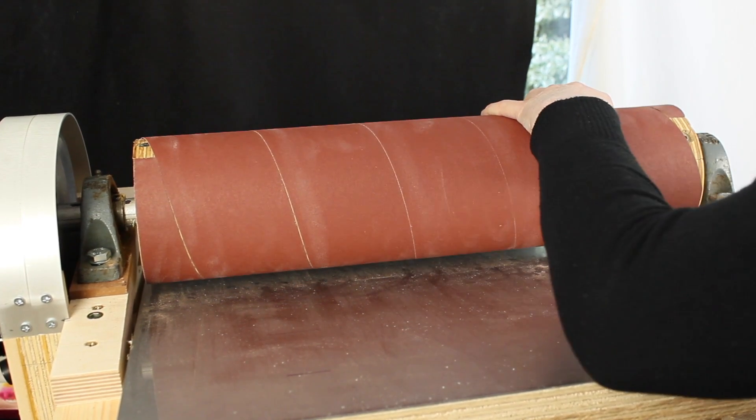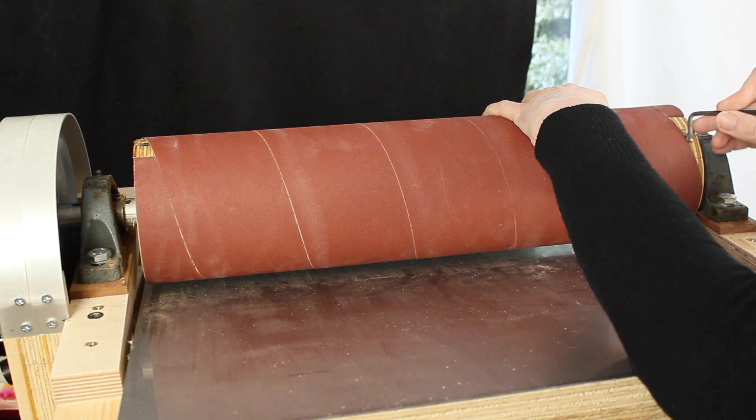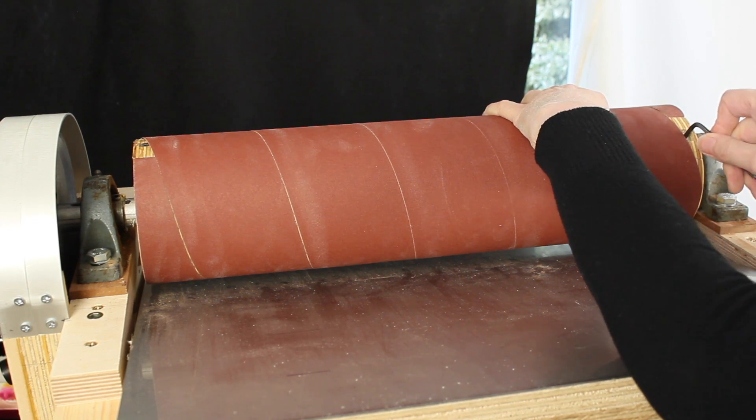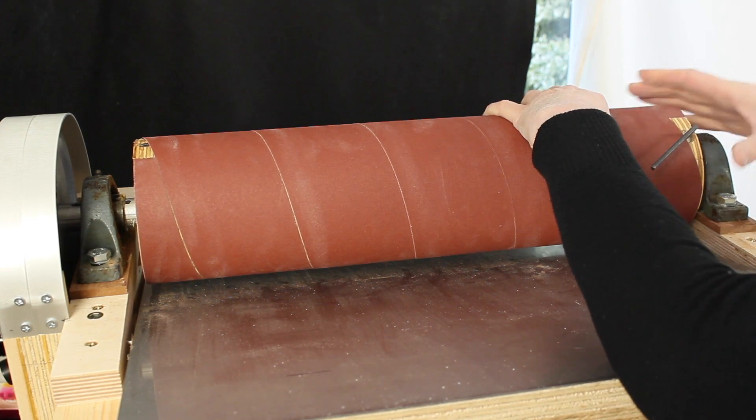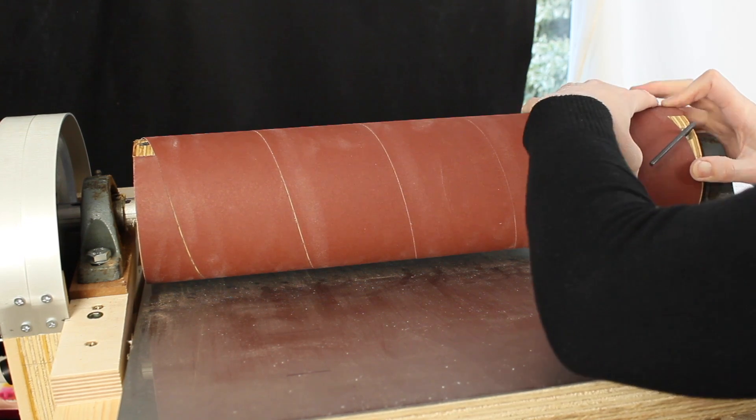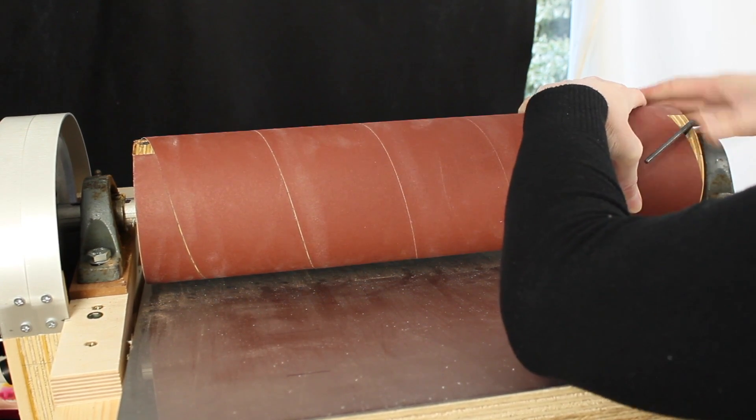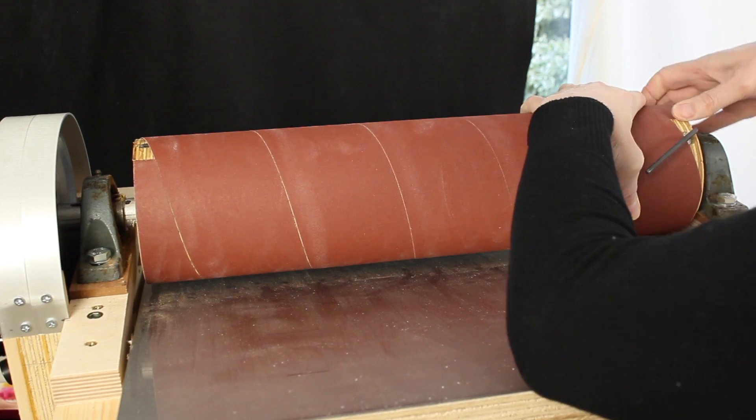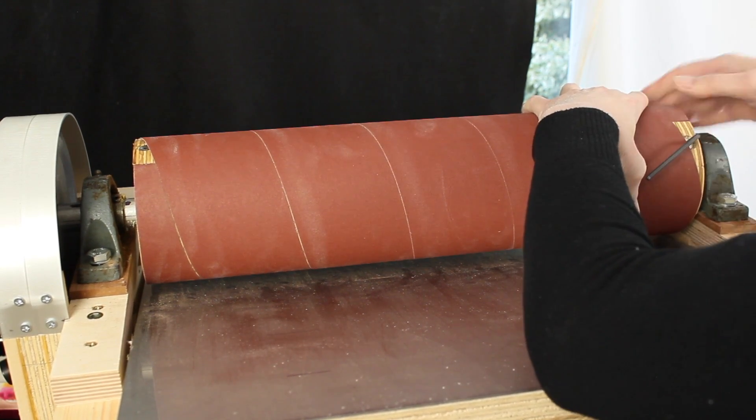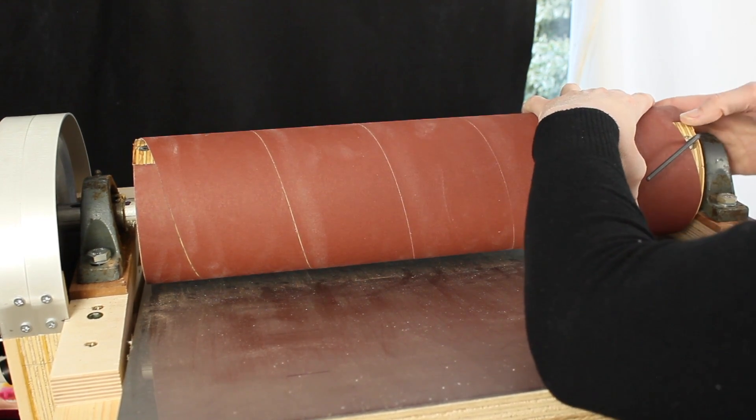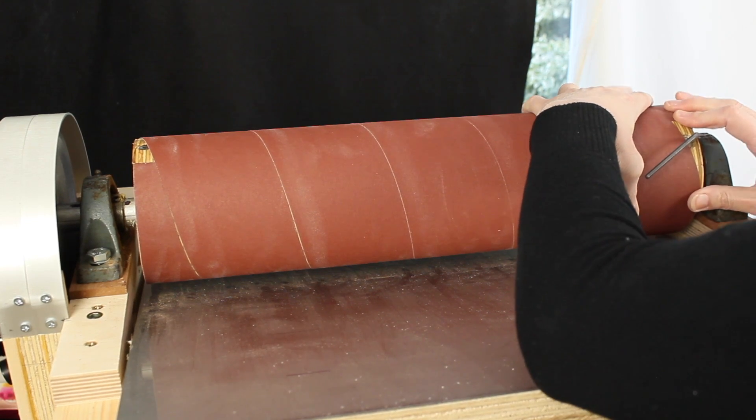There's about two millimeters of slack in that. It's really worrying that every time I rub my hand across the sandpaper it goes white with skin cells. That's really not very good. Maybe I should have worn gloves.